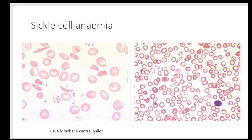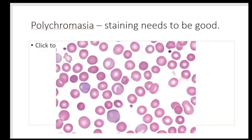Sometimes you may find sickle cells which give away the diagnosis. It's important to differentiate a sickle cell from a pencil form — the most important feature being that sickle cells have absent central pallor, whereas pencil cells retain the central pallor. So don't get trigger-happy calling elongated cells sickle cells. Polychromasia shows a slight change in color of RBCs compared to normal, and good staining quality of the smear is essential to pick up these subtle differences.